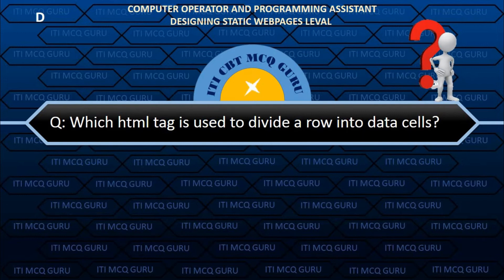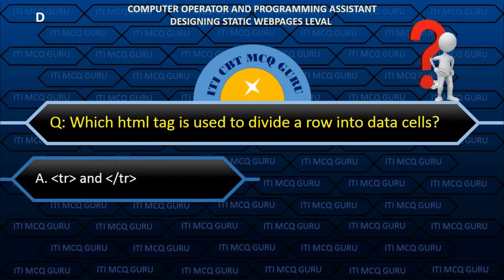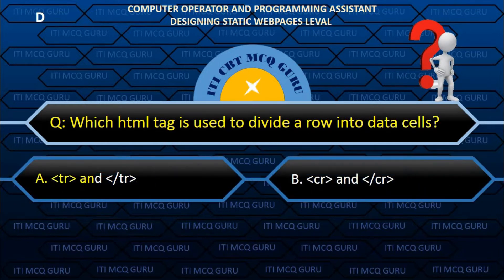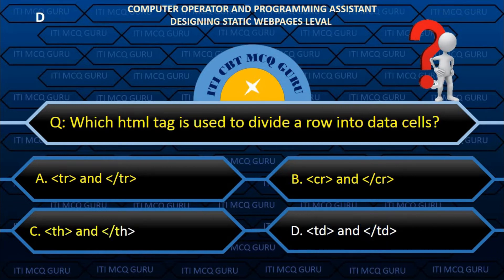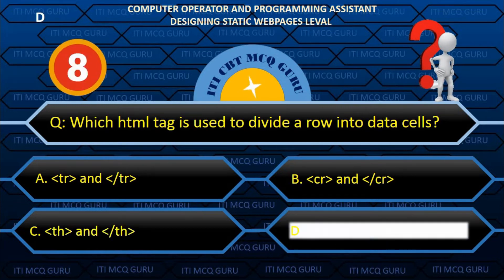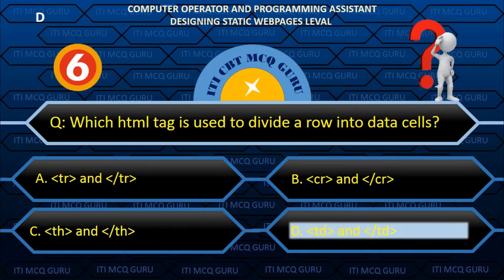Which HTML tag is used to divide a row into data cells? D. td and /td.